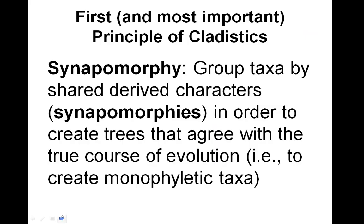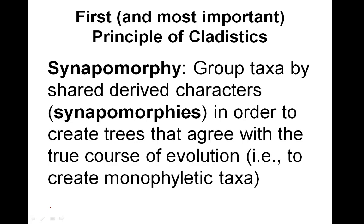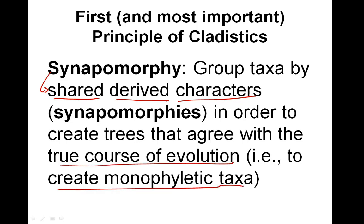This brings us to our first and most important principle of cladistics: grouping by synapomorphy. Synapomorphy is just a fancy way of saying shared derived characters — Hennig invented his own terminology, and a shared derived character was called a synapomorphy. In order to create trees that agree with the true evolutionary course of evolution — in order to create monophyletic taxa — we have to group by shared derived characters, group by synapomorphies.